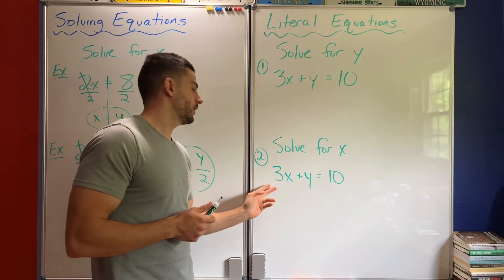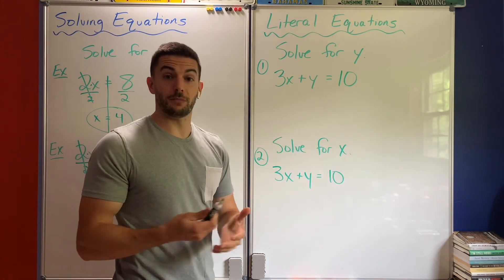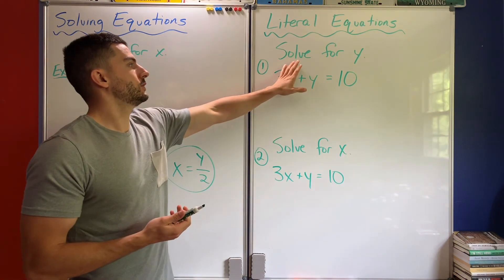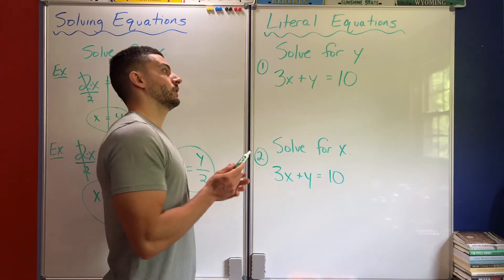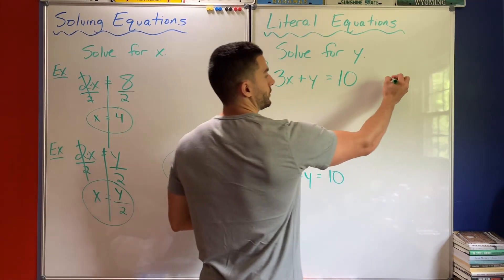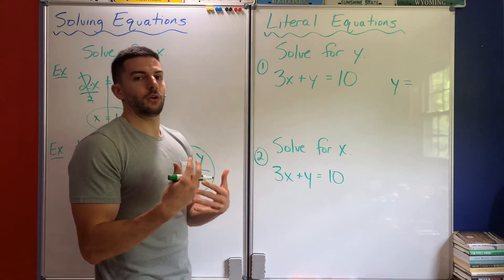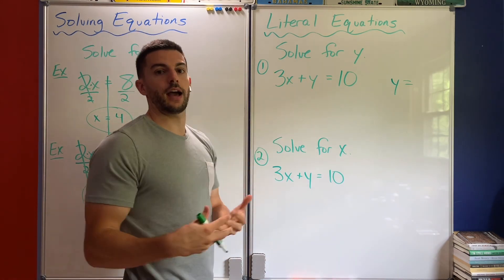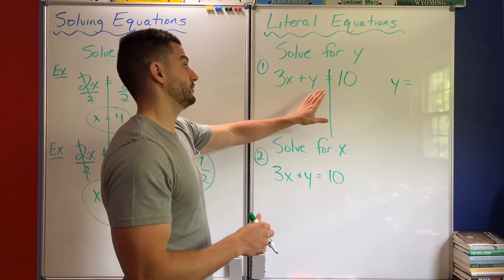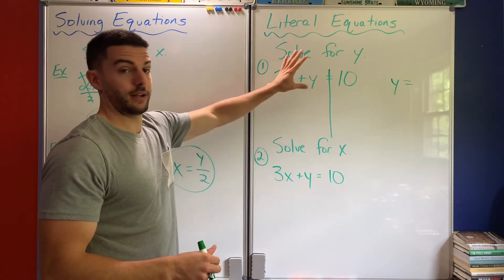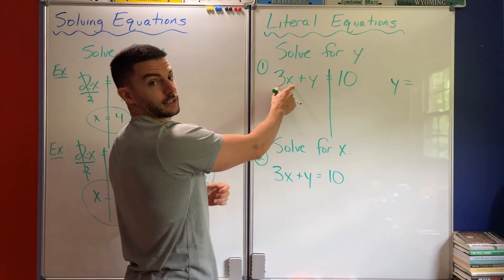Notice numbers 1 and 2 are the exact same equation: 3x plus y equals 10. But we're going to get different variables by itself because that's what it's asking. Number 1 says solve for y. So my job is to get my answer to be y equals something. I want to locate the y and get that by itself — that means I need to cancel whatever other terms are on that side.